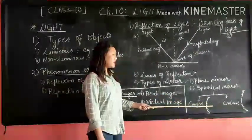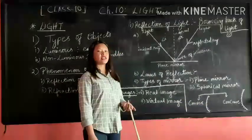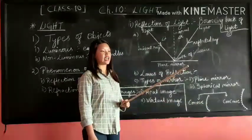Whereas concave mirror is a mirror that has a reflecting surface that curves inwards. It is also known as a converging mirror.